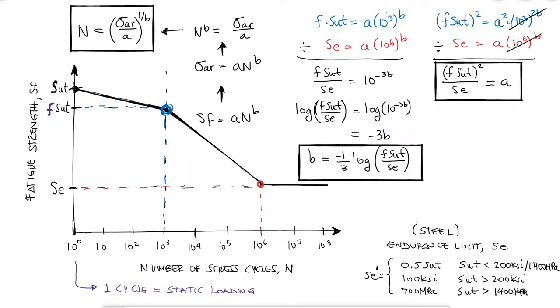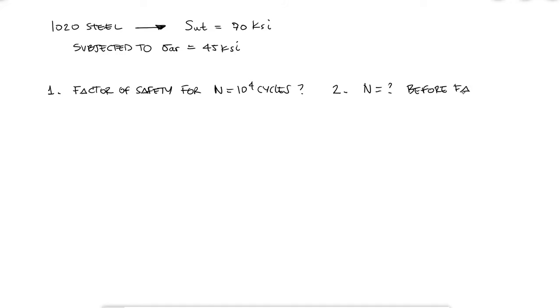The SN diagram only applies to completely reversed stresses, but in future videos we will see how to transform any fluctuating stress to make use of the SN diagrams. Let's take a look at a quick example. A rotating beam made out of a 1020 steel has an ultimate strength of 70 KSI. If the specimen is subjected to a completely reversed stress of 45 KSI, what would the factor of safety be for 10,000 cycles, and separately, how many cycles would it endure before failure?